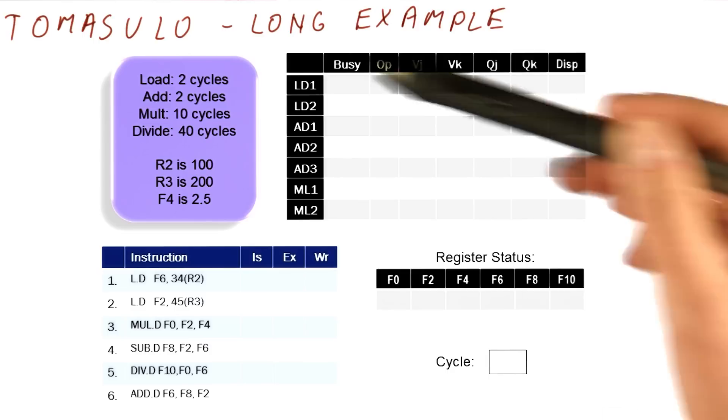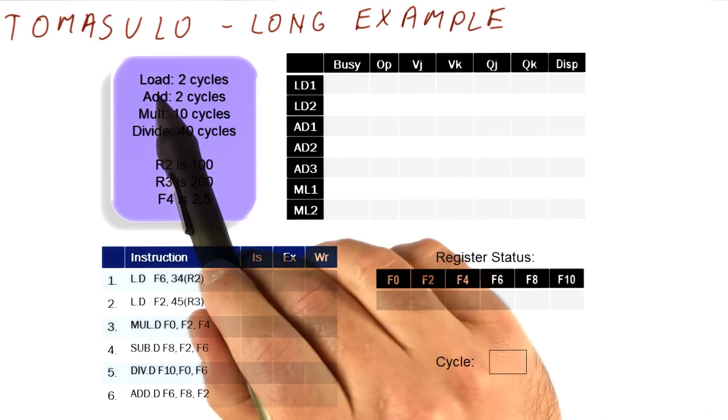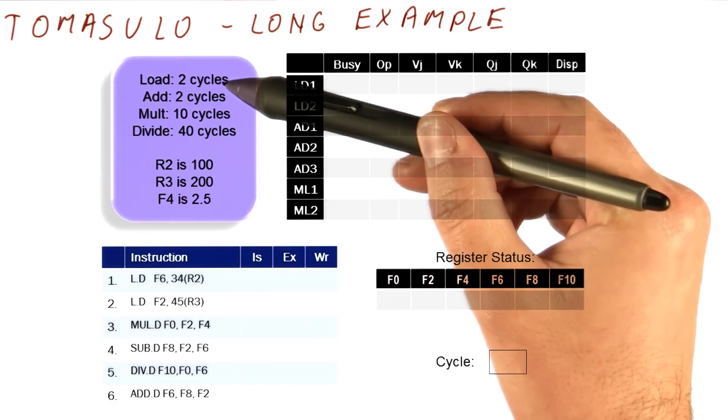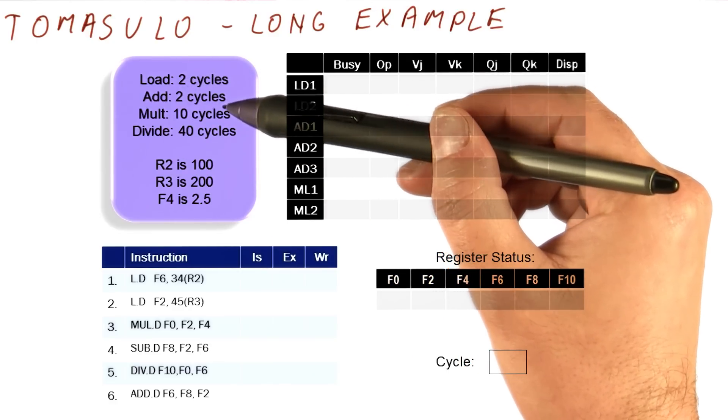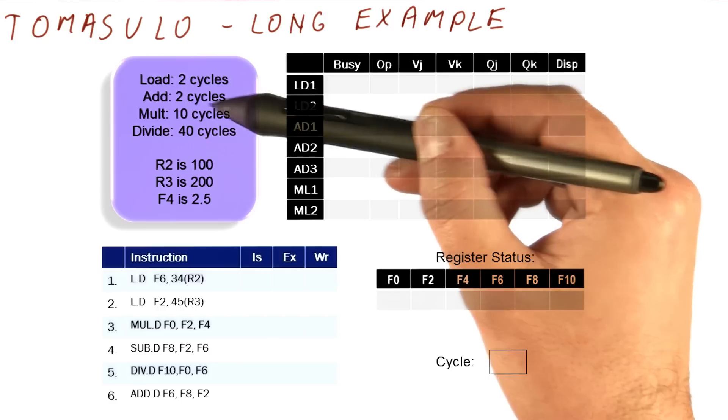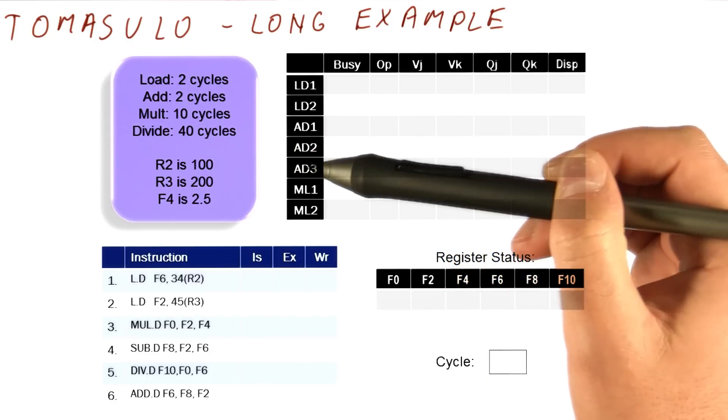I conveniently came up with tables like this so that I don't have to draw everything by hand. Here we have the characteristics of our processor. The load unit takes two cycles to execute the load, add takes two cycles to execute adds and subtracts. Multiplication will take 10 cycles and divide will take 40 cycles, and they're done in the multiplication unit.